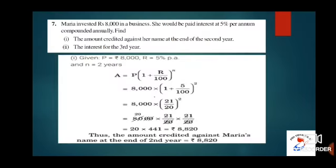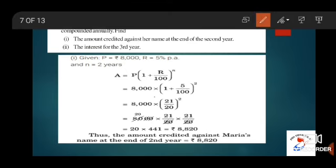Let us continue with problem number 7. Maria invested Rs. 8,000 in a business. She would be paid interest at 5% per annum compounded annually. Find: (1) the amount credited against her name at the end of 2nd year, and (2) interest for the 3rd year. Given: principal is Rs. 8,000, rate of interest 5% per annum, number of years is 2.